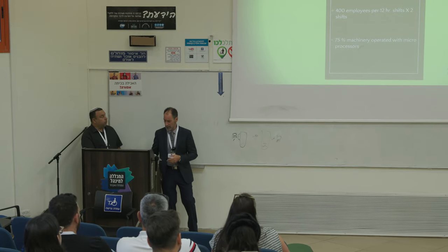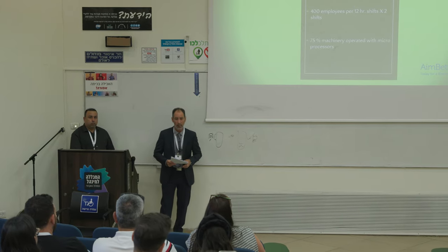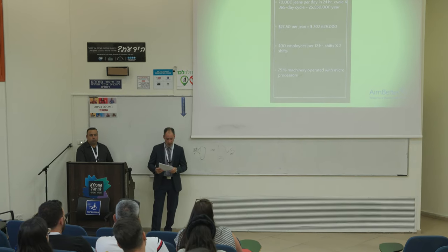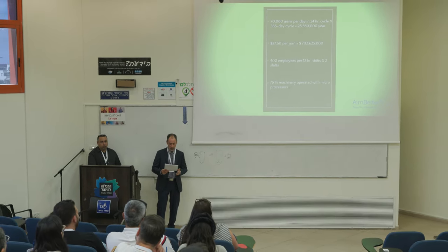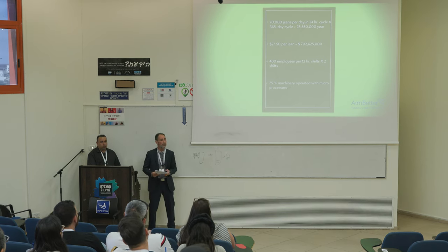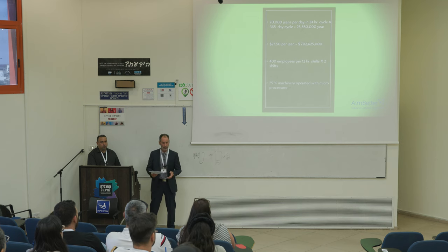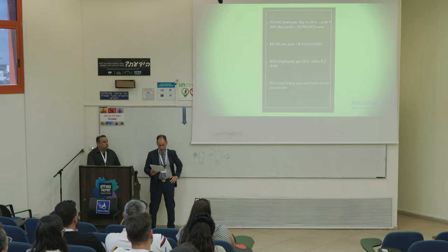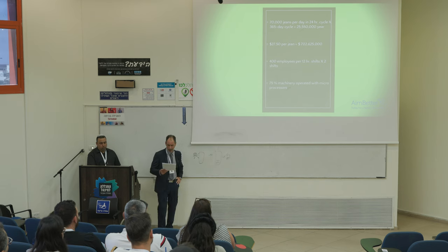On this slide I'm going to show you numbers for my actual production and how they turn into revenue. 70,000 pairs of jeans on a 24-hour cycle, 365 days a year — that's 25.5 million pairs every single year. At an average of $2,750 Canadian per pair, it gives me revenue of around $702 million per year. I employed 400 employees per 12-hour shift, two shifts, so 800 total employees.